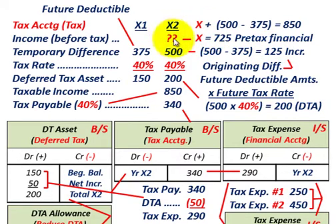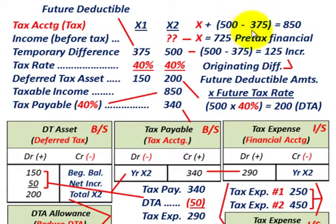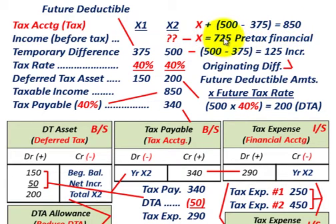So X — our income before taxes — is straightforward: X plus the originating difference ($500,000 minus $375,000) equals our taxable income of $850,000. Moving the $125,000 difference over to the other side reduces $850,000 down to $725,000. So X — our income before taxes — equals $725,000.